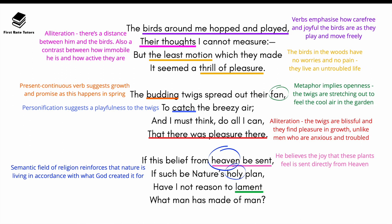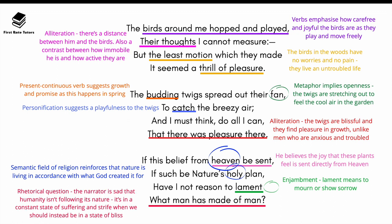Anticipating that question, Wordsworth considers whether he has reason to lament, using enjambment next to 'lament' to illustrate his mourning and sorrow. The final rhetorical question — 'have I not reason to lament what man has made of man?' — powerfully shows how Wordsworth is saddened that humanity isn't following its nature and is in a constant state of suffering and strife, when it should instead be in a state of bliss.